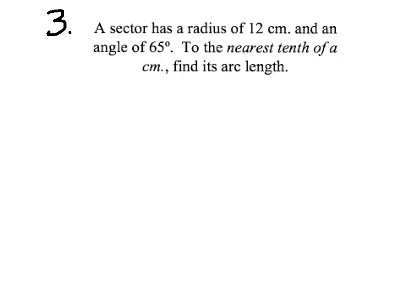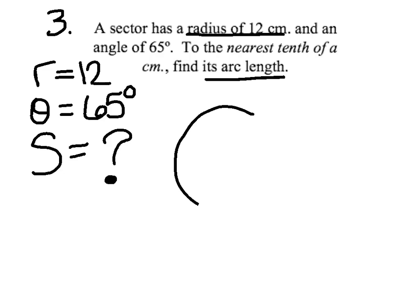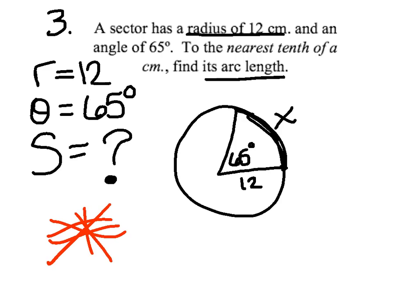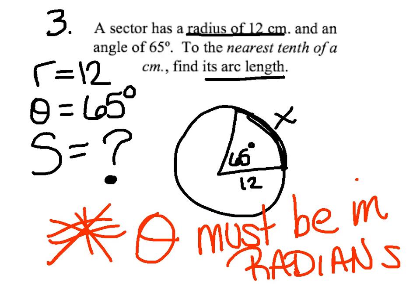Let's try a harder one. A sector has a radius of 12 centimeters and an angle of 65 degrees. Find, to the nearest tenth of a centimeter, its arc length. Radius is 12, central angle is 65 degrees. This is as hard as the question gets, and the whole catch is that theta must be in radians — and 65 degrees is clearly not.